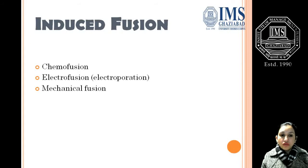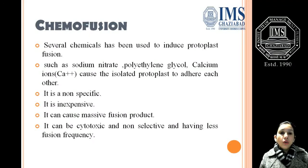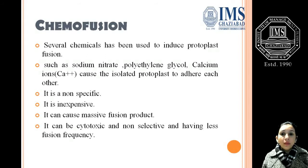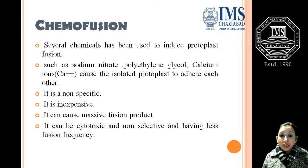Induced fusion includes three methods: chemo fusion, electro fusion, and mechanical fusion. In chemo fusion, protoplasts are fused with the help of chemicals such as sodium nitrate, polyethylene glycol, and calcium ions, which cause isolated protoplasts to adhere to each other. This method is non-specific and inexpensive and can cause massive fusion, but it can be cytotoxic and non-selective with a lower fusion frequency.